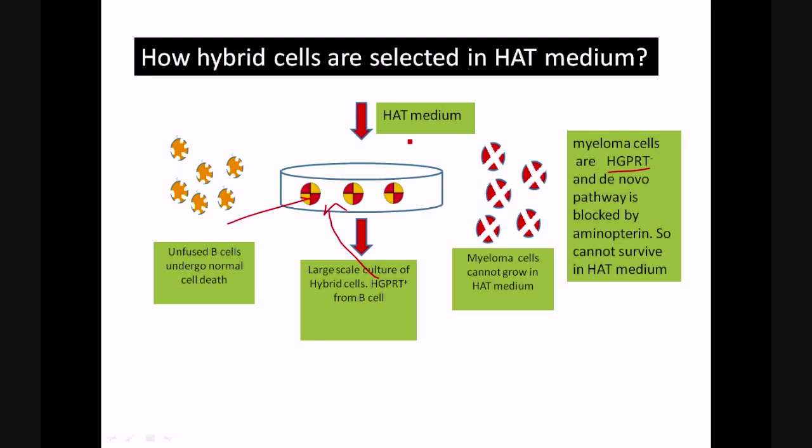Only in HAT medium, only these hybrid cells can grow. Later we can isolate these and we can culture them in large scale for the production of monoclonal antibodies.